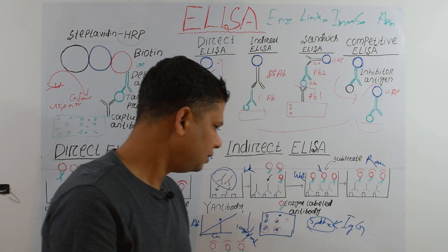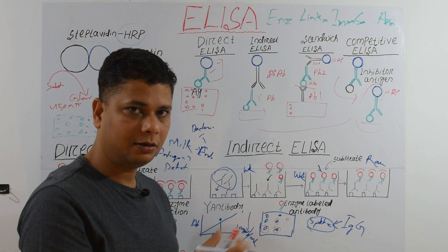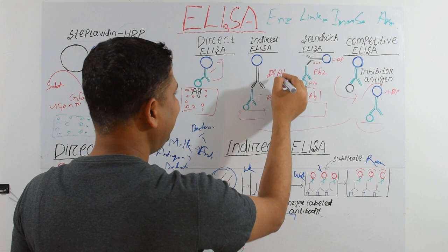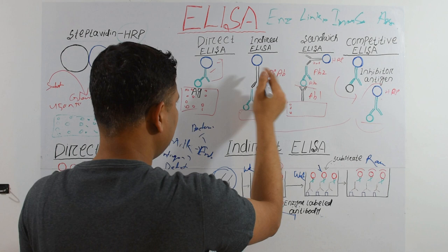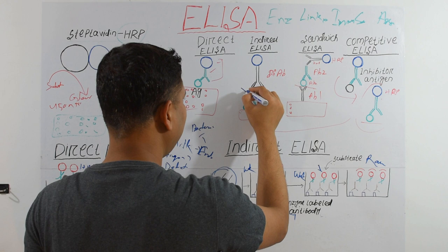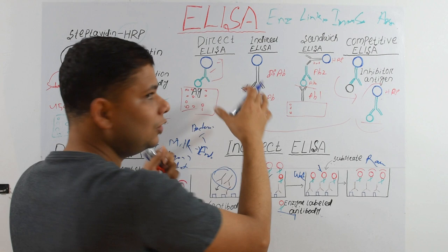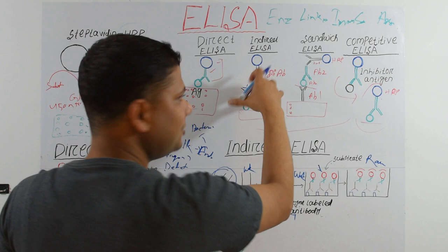The advantages of Indirect ELISA: because we use secondary antibodies to detect luminosity, multiple secondary antibodies can bind to a single primary antibody, so the signal is amplified and absorption is higher. The second advantage is flexibility.